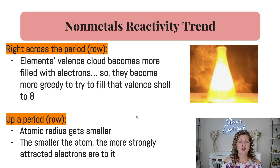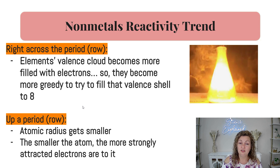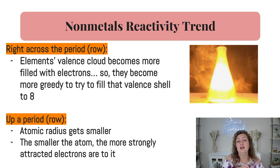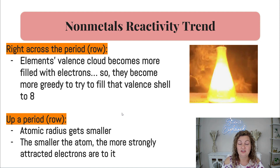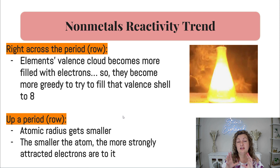Let's switch gears and talk about nonmetal reactivity trends, going right across the period — the row. Elements' valence shell becomes more filled with electrons, so they become more greedy to fill their valence shell. In other words, as they get to six or seven valence electrons, they want to fill it to eight. So they're going to be reacting a lot quicker to grab onto other electrons and fill up to a full octet. If we go up a period, the atomic radius gets smaller, and the smaller the atom, the more strongly attracted it is to electrons because that nucleus is pulling those electrons in strongly.